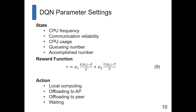In our DQL network, we have five states and four actions. The five states are: CPU frequency, communication reliability, CPU usage, queue number, and accomplished number. The four actions are: local computing, offloading to AP, offloading to a peer SMD, or waiting. The reward function evaluates based on energy consumption and time delay. We use the state, reward, and action to train our DQL network within our system model.